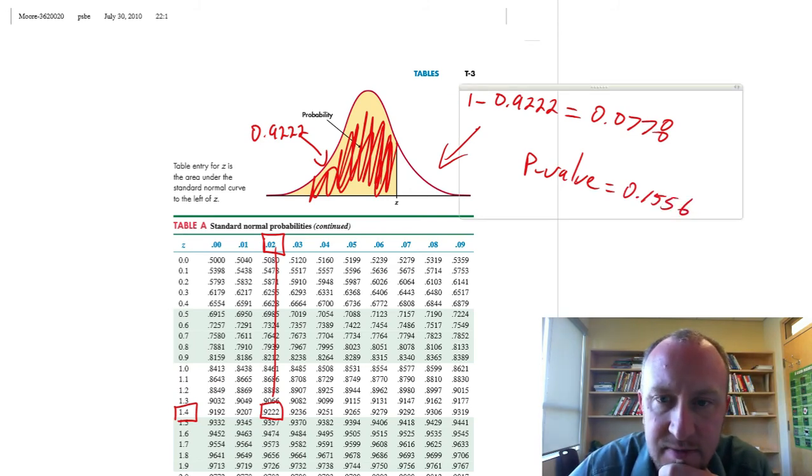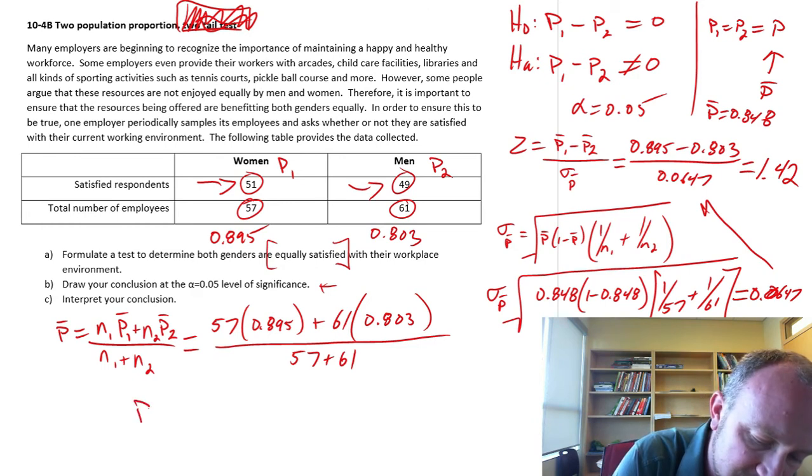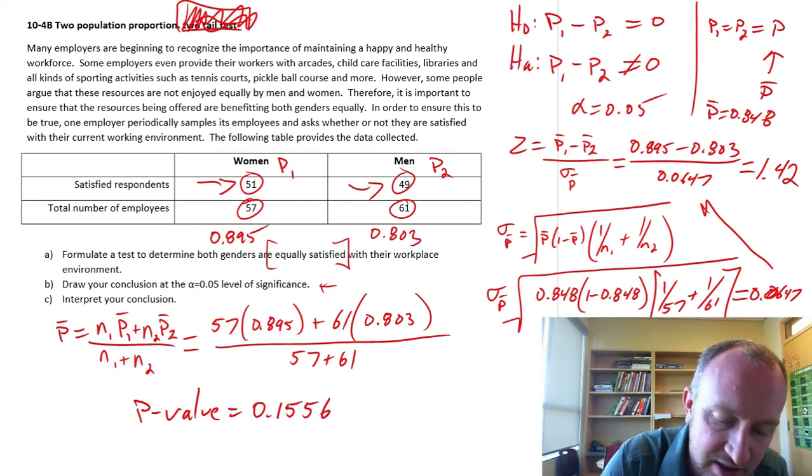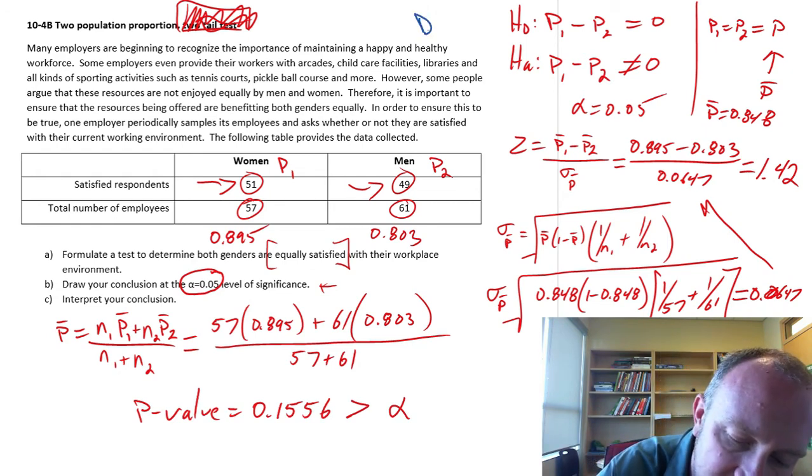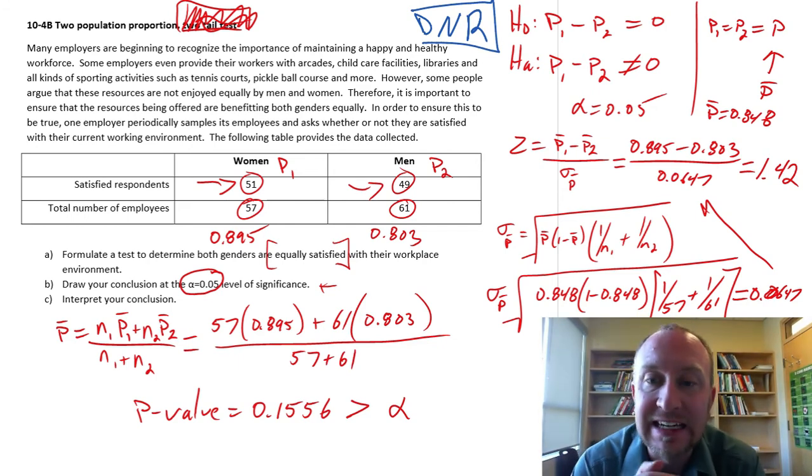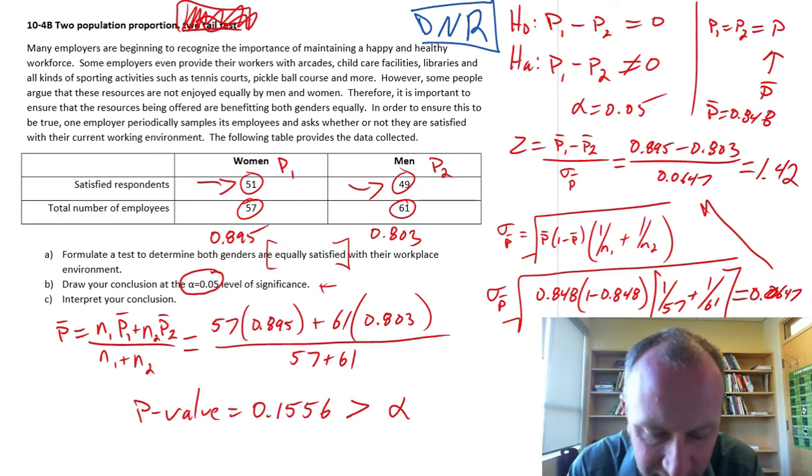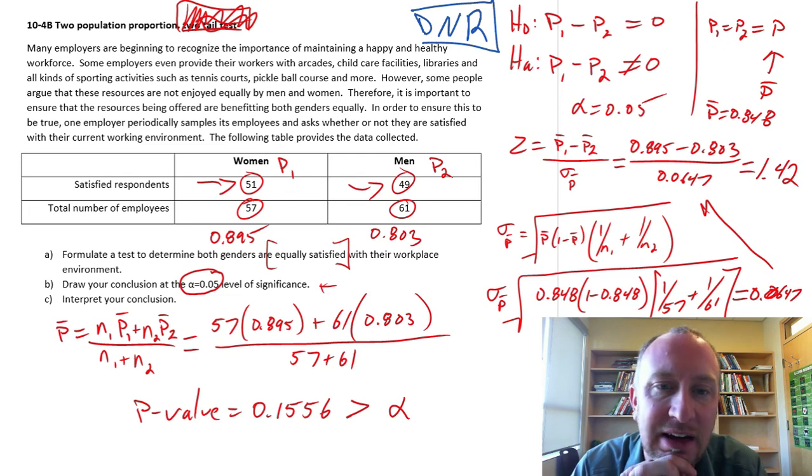I have a p-value equal to 0.1556. If we're performing this test at the alpha 0.05 level of significance, that is greater than alpha. So we do not have sufficient evidence to reject. This is a do not reject. I am unable to show that there is a difference in rates of satisfaction among men and women with respect to all of these wonderful resources that are being offered. I'm unable to say that there is a difference. The statistics supports the claim that they are equivalent.